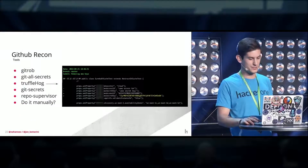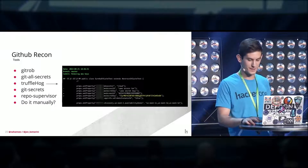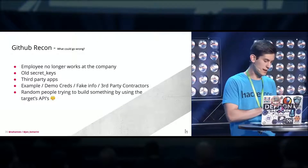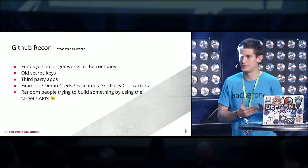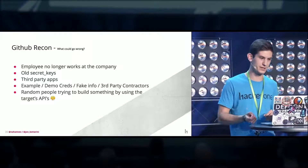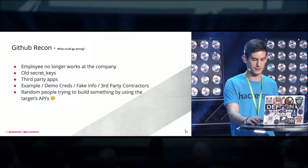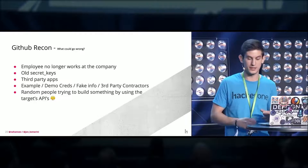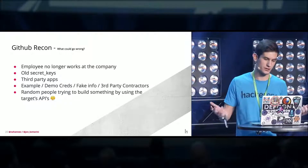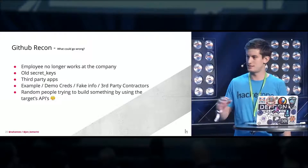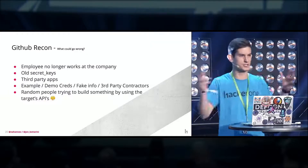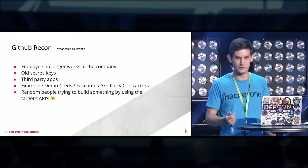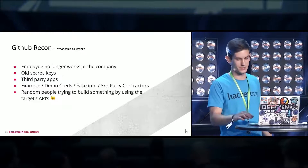What could go wrong when doing GitHub recon? A lot of times when you find a really old snippet of credentials, it's from an employee that doesn't work there anymore, and it's really disappointing because you have no way to verify it — it's usually an internal password. There are old secret keys, third-party apps, and sometimes companies put out example or demo credentials to use for a certain amount of time, which are obviously useless. And then there are people trying to mash together parts of an API, and you can't tell if it belongs to the corporation or a third party.